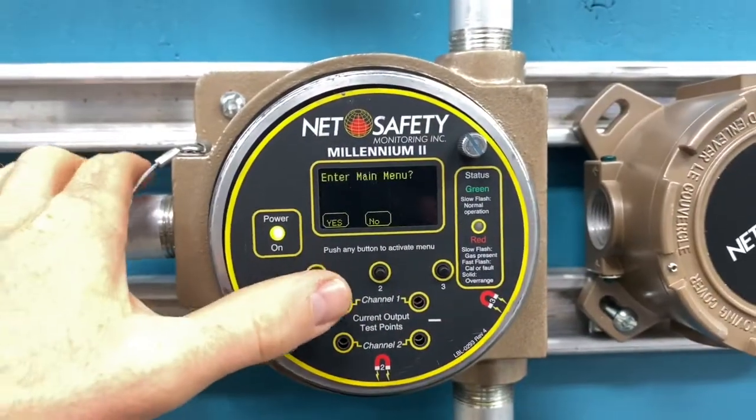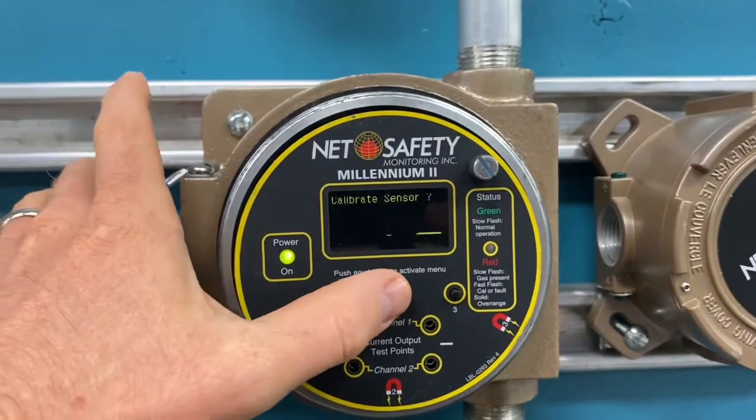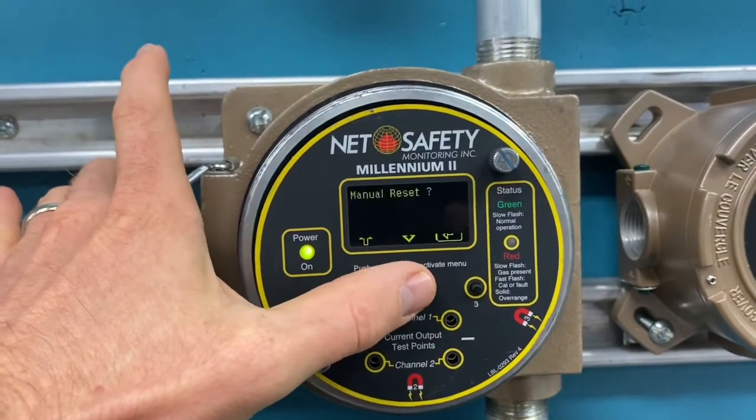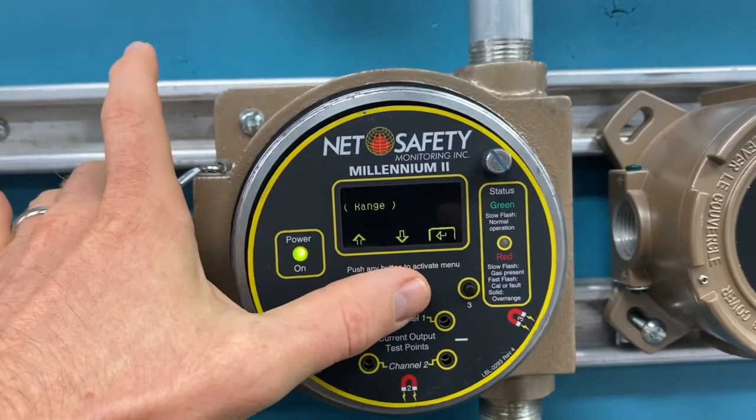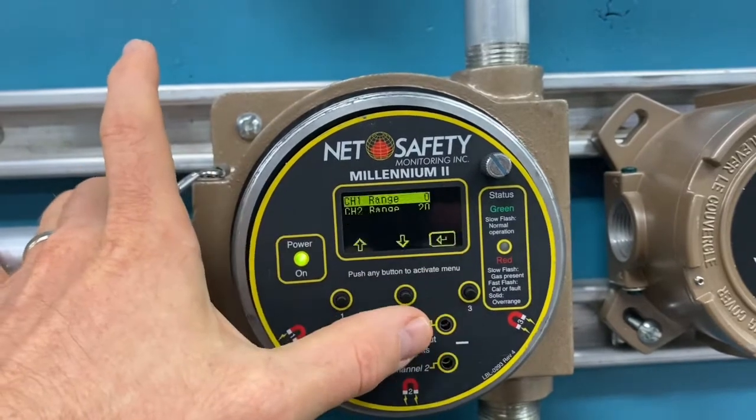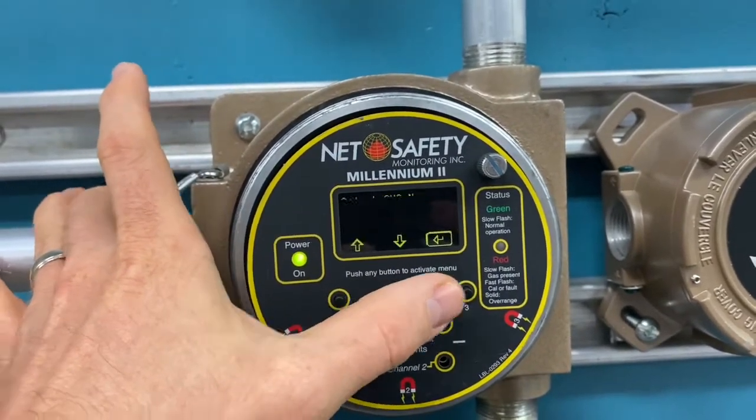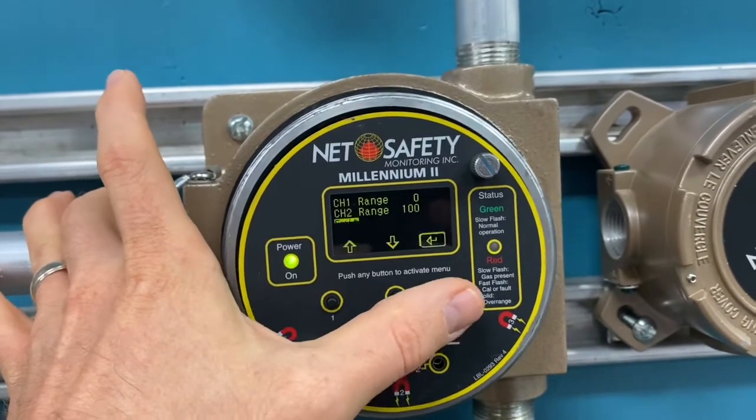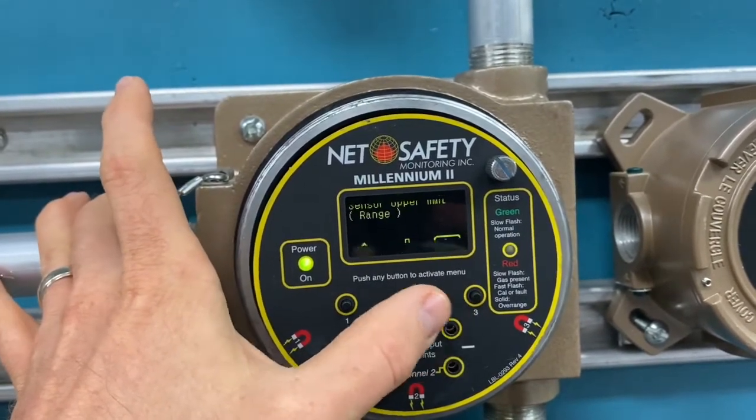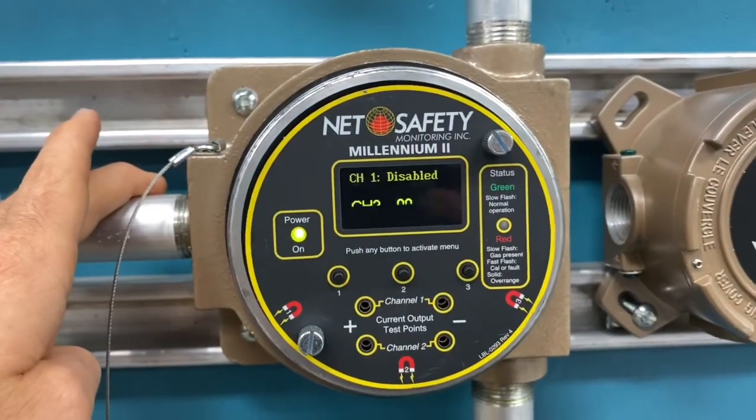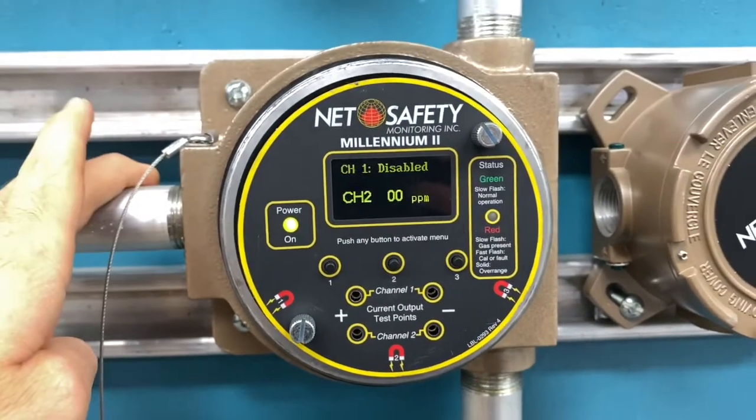Last part of this lab, we need to set the sensor back to 100. I'm going to go down to sensor range limit and we're going to change channel two back to 100. Exit and we're back to the main screen. We're good to go for the next lab group.